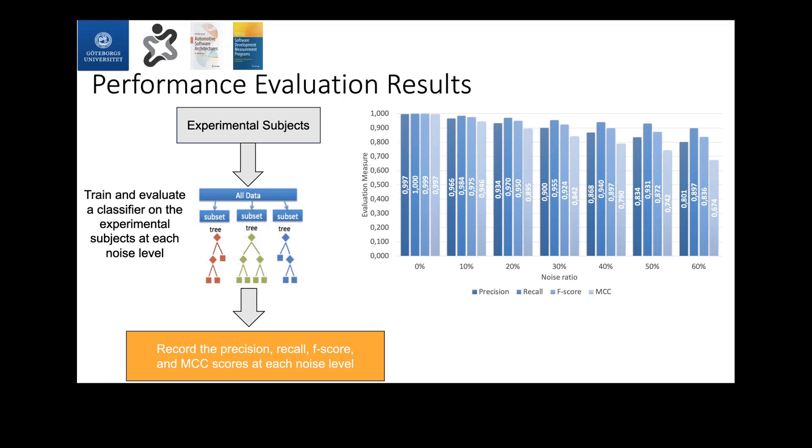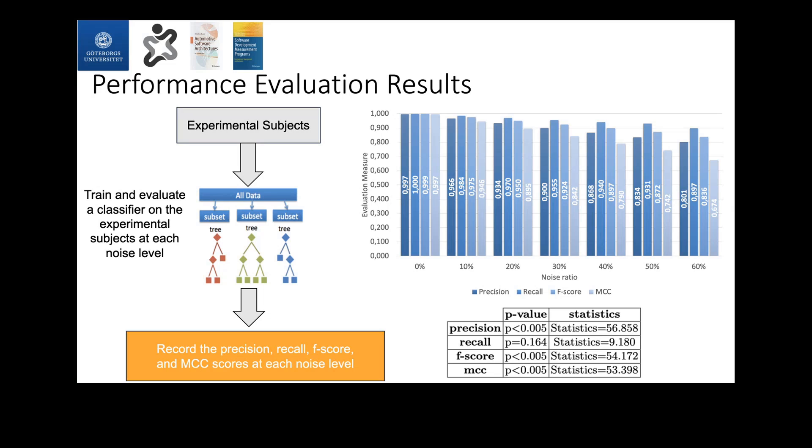The results showed us that there was a downward trend. The more we went up in seeding class noise, there was a downward trend in performance across the four dependent variables, with an exception for the recall, which showed a downward trend when the noise level exceeded 30 percent. And then we did a statistical test to compare whether those results are significant, if there's a significance in those performance scores. And we did find a significance in those performance scores when running statistical tests, with an exception for the recall, which showed significance when the noise level exceeded 30 percent.